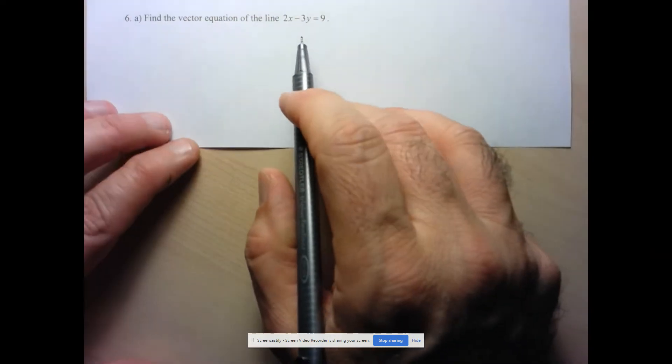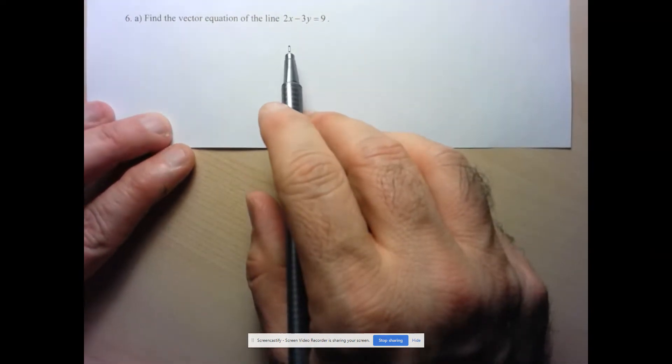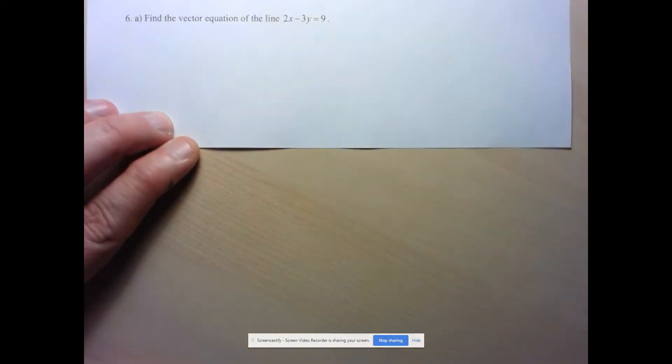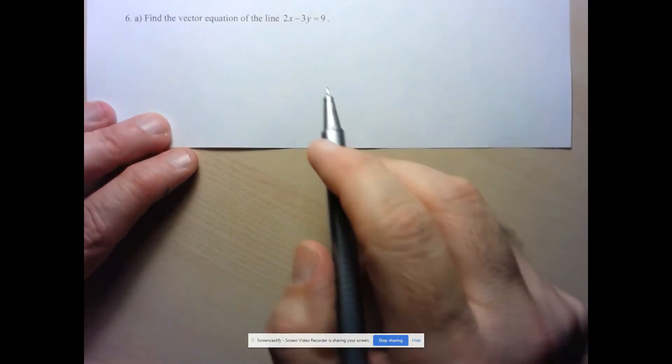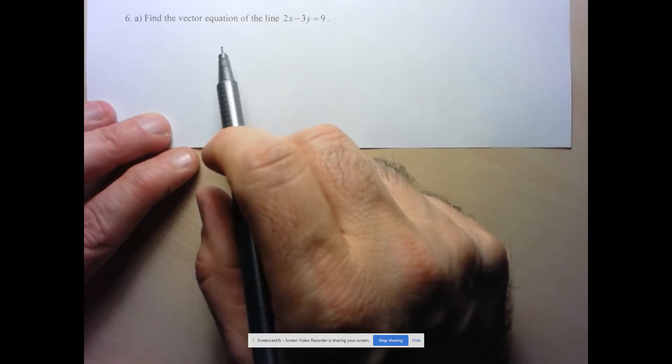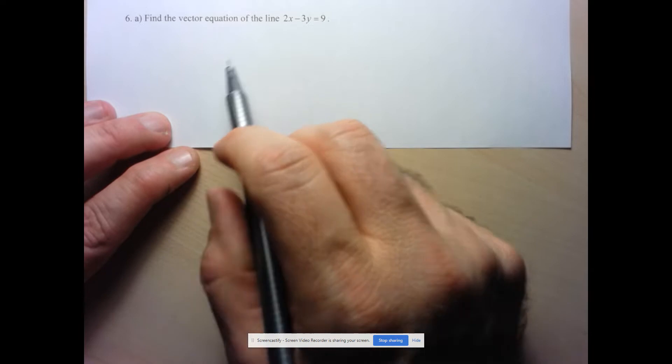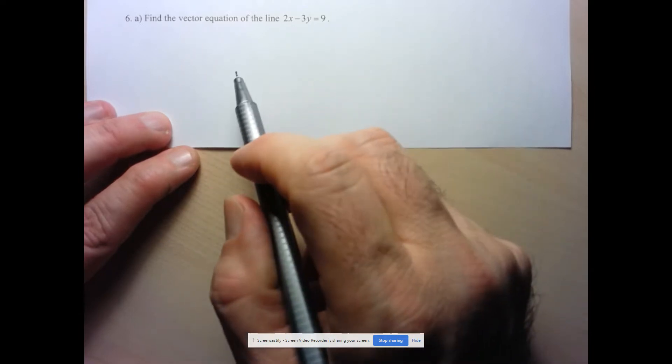So we're going to take a line that's given in standard form and they want us to find the vector equation. So the question is, how can we use this information to determine a direction vector, since we need that for the vector equation line, and finding a point, well that's easy, we can find lots of points.